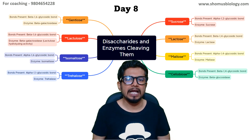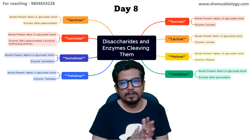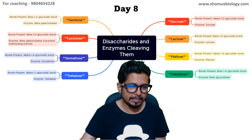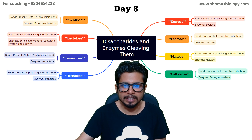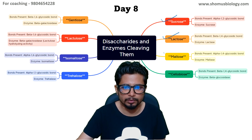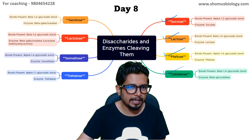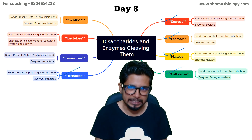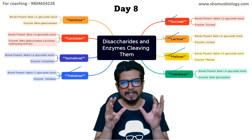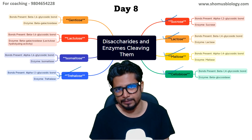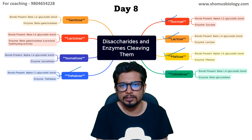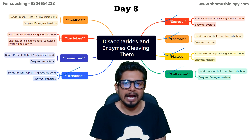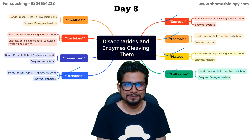What kind of linkage is present in what type of disaccharide and how they are cleaved is very clear. Among all these disaccharides, sucrose, lactose, maltose, cellobiose, and trehalose are the most important. Even if you want to study selectively, these are the ones to focus on. This will help you answer most memory-based questions in CSIR NET, GATE, and ICMR examinations.